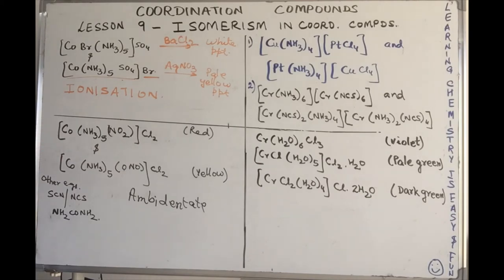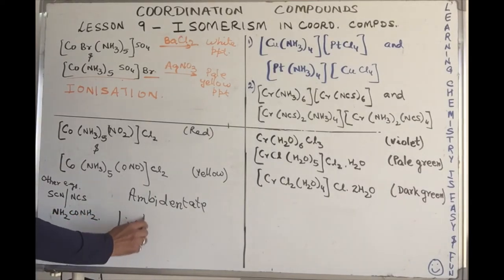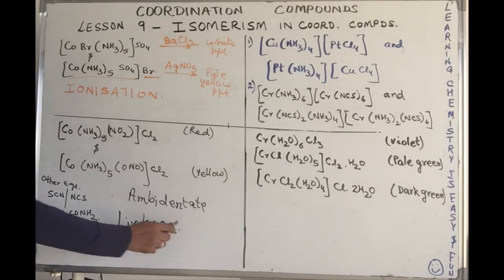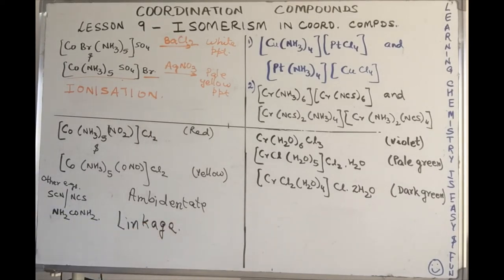Not both of them simultaneously. Please remember this is not a chelate effect. They can either donate through nitrogen or oxygen. Other examples are like SCN, NCS, urea. Urea can donate through nitrogen or through oxygen. So this is an example of linkage isomerism.